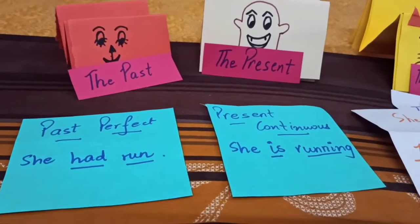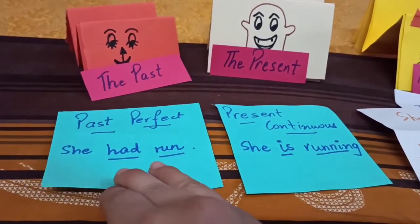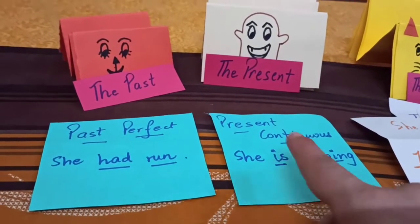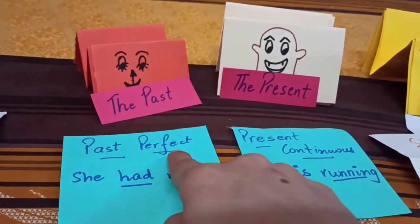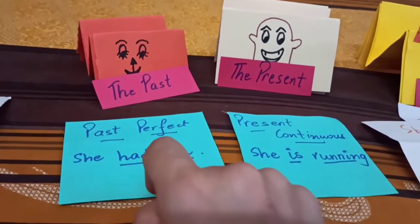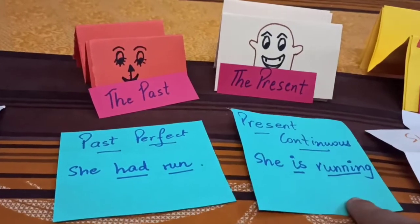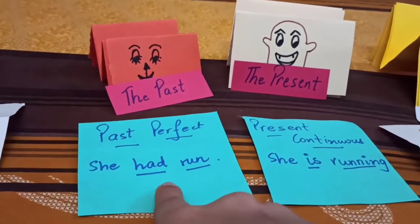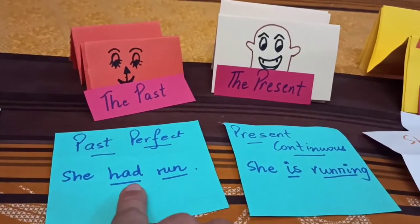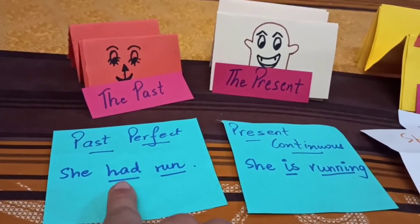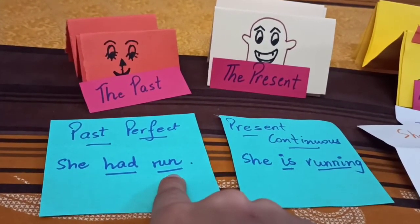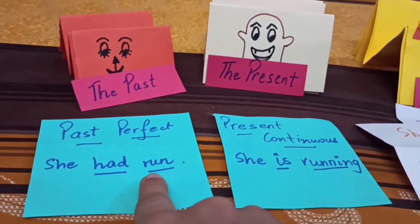The past decided to call its sister — the past perfect tense. Past perfect says: present continuous, you are telling me about the action which is going on. I am telling you of the action which has been completed. She is running — but she had run. 'Had' tells us of the action which has been completed. So when we talk of a perfect tense, we use 'had' plus the third form of the verb. Run — ran — run.